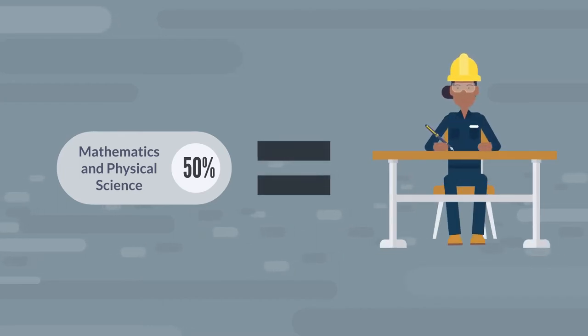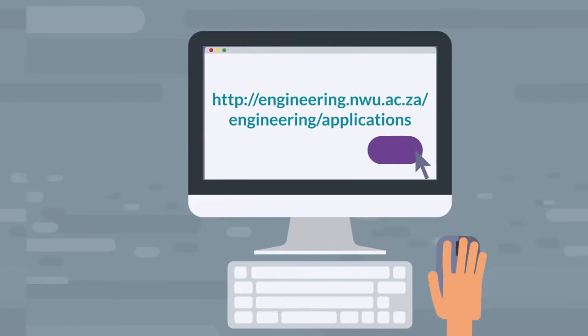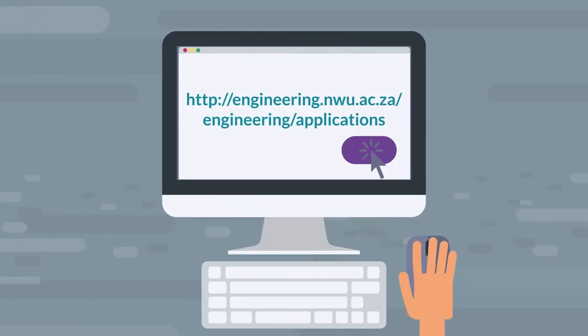Students with 50% in both mathematics and physical sciences may have the opportunity to write a test as additional point of entry or enroll for the Excel bridging program. Please visit for more information and applications.